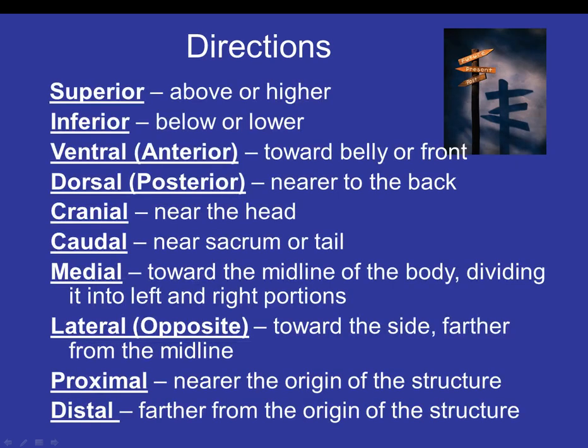The directional terms we'll be talking about are all the terms associated with referring to different parts of the body. These include: superior, inferior, ventral, dorsal, anterior and posterior — which refer to the same things as ventral and dorsal — cranial, caudal, medial, lateral, proximal, and distal. We'll go into detail on all of those in the coming slides.